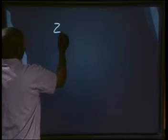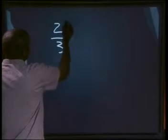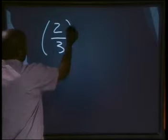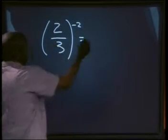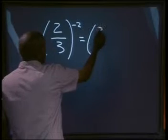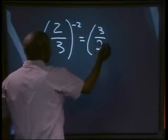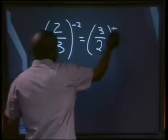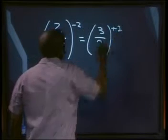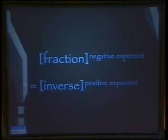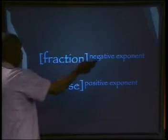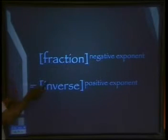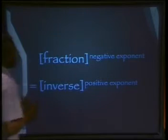Look again: 2 over 3, all to the power of minus 2, equals the inverse of our fraction, which will be 3 over 2, all to the power of positive 2. So a fraction with a negative exponent equals the inverse of that fraction to a positive exponent.